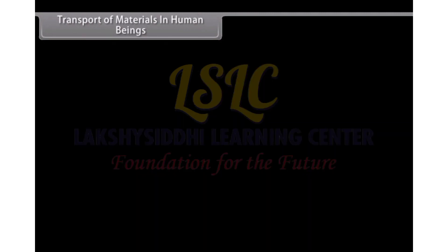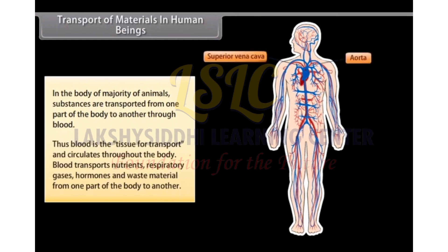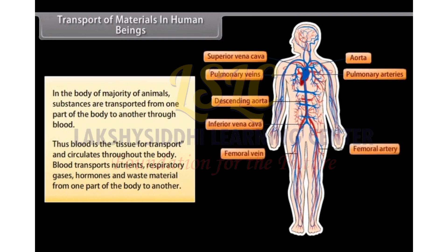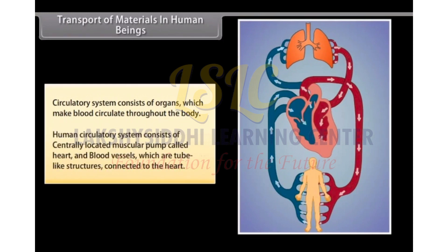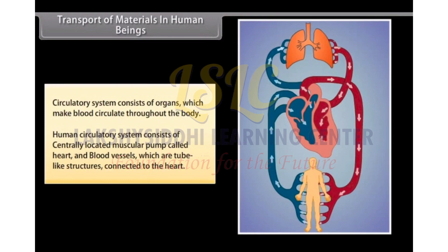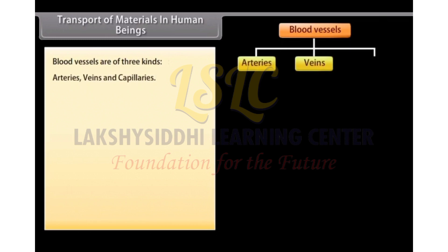In the body of majority of animals, substances are transported from one part of the body to another through blood. Blood is the tissue of transport and circulates throughout the body. Blood transports nutrients, respiratory gases, hormones and waste material from one part of the body to another. Circulatory system consists of organs which make blood circulate throughout the body. The human circulatory system consists of a centrally located muscular pump called heart and blood vessels, which are tube-like structures connected to the heart. Blood vessels are of three kinds: arteries, veins and capillaries.